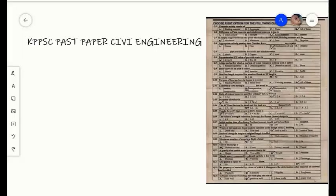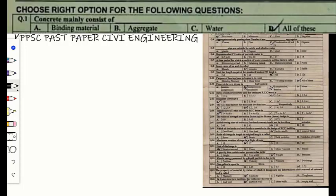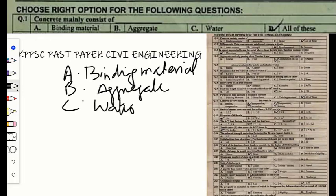Hi, welcome back. Today I will completely solve the MCQs of several engineering past papers conducted for the post of sub-engineer. Let's get started. In question number one, it is given that concrete mainly consists of: option A is binding material, option B is aggregate, option C is water, and option D is all of these.